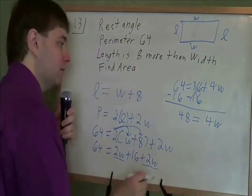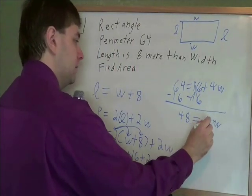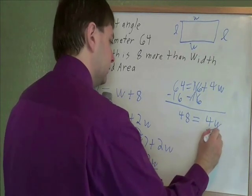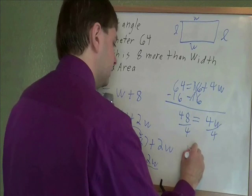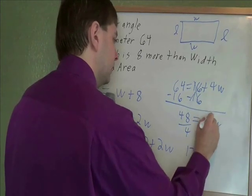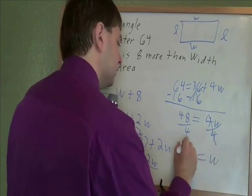And the 4W just stays right there. Next step in getting W by itself, we've got to get rid of a times 4. Opposite of times 4 is divide by 4. 48 divided by 4 is 12. And 12 is our width W.